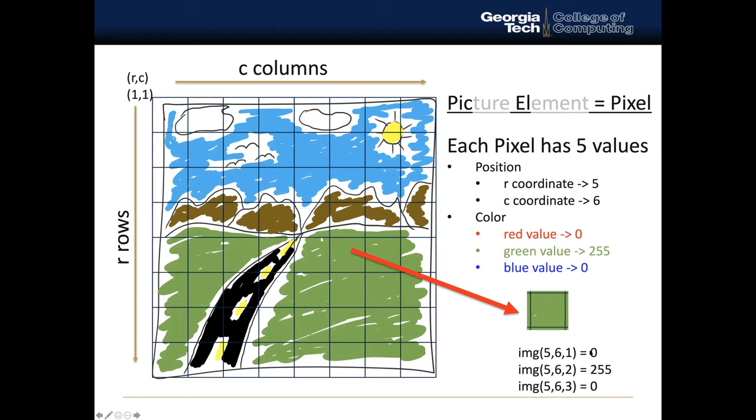So what we see here is that we have red values of 0 and blue values of 0 and the green value of 255. And that means that this pixel is a completely green pixel. Those are essentially the three components that will make up a pixel image. And so let's dive a little bit deeper.